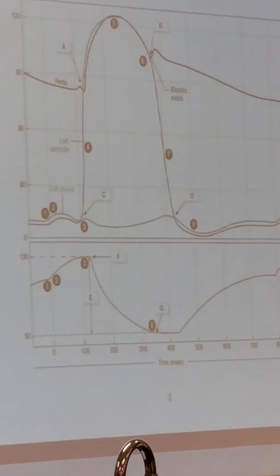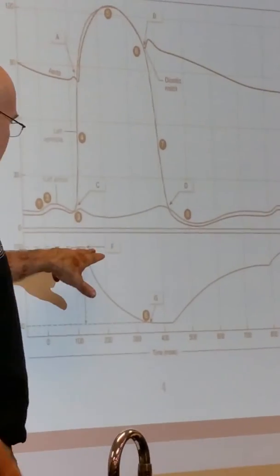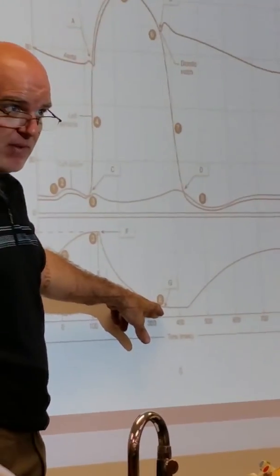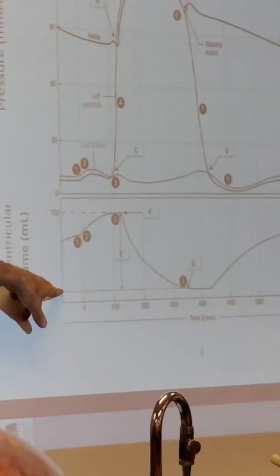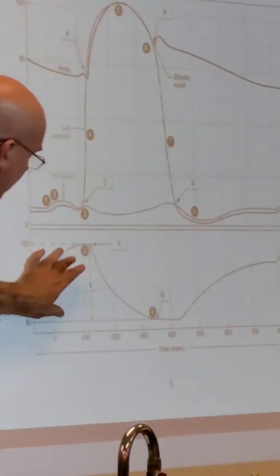I also explained how this is your end diastolic volume and this is your end systolic volume. Notice how the heart's not empty—there's still 50 ml left.